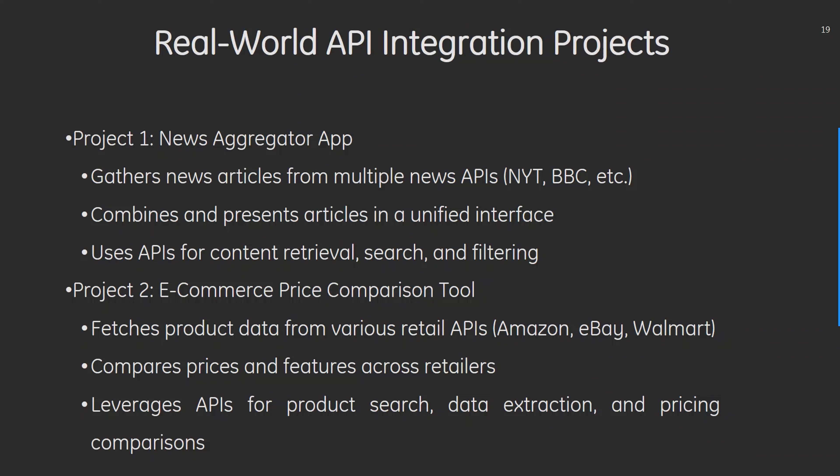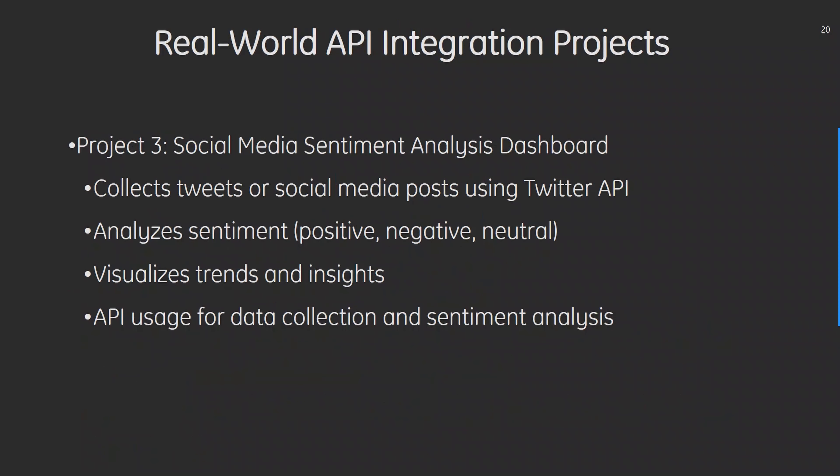For real-world API integration projects: first, a News Aggregator App gathers news articles from multiple news APIs, combining and presenting them in a unified interface using APIs for content retrieval, search, and filtering. Second, an E-Commerce Price Comparison Tool fetches product data from various retail APIs such as Amazon, eBay, and Walmart, comparing prices and features across retailers and leveraging APIs for product search, data extraction, and pricing comparisons. Third, a Social Media Sentiment Analysis Dashboard collects tweets using the Twitter API, analyzes sentiment as positive, negative, or neutral, and visualizes trends and insights.